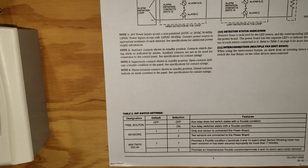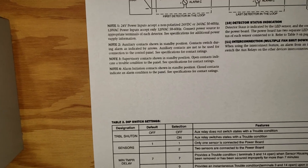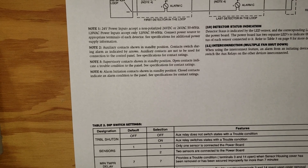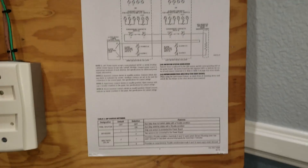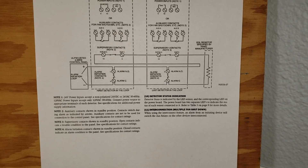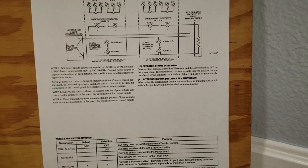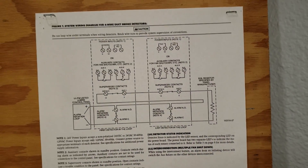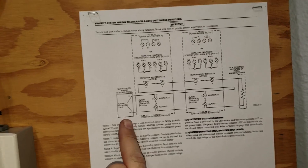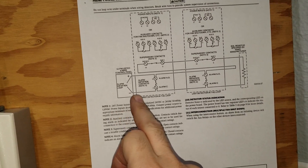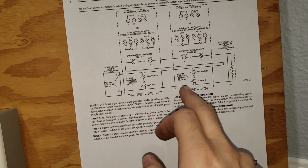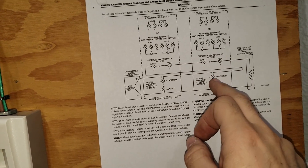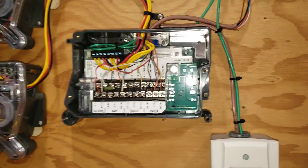I'm going to point out something on this sheet. If you read the note, number three is what I read off to you earlier — supervisory contact shown in standby position, open contacts indicate a trouble condition to the panel. This is the schematic to wire up this detector, and notice the way I wired in that resistor — it actually tells you how to do that right here in the schematic. All I did was follow this schematic exactly: took my initiation loop wires from my alarm, ran them across the alarm contacts, but also ran the resistor through the supervisory contacts, common and normally open, and then back to the contacts.